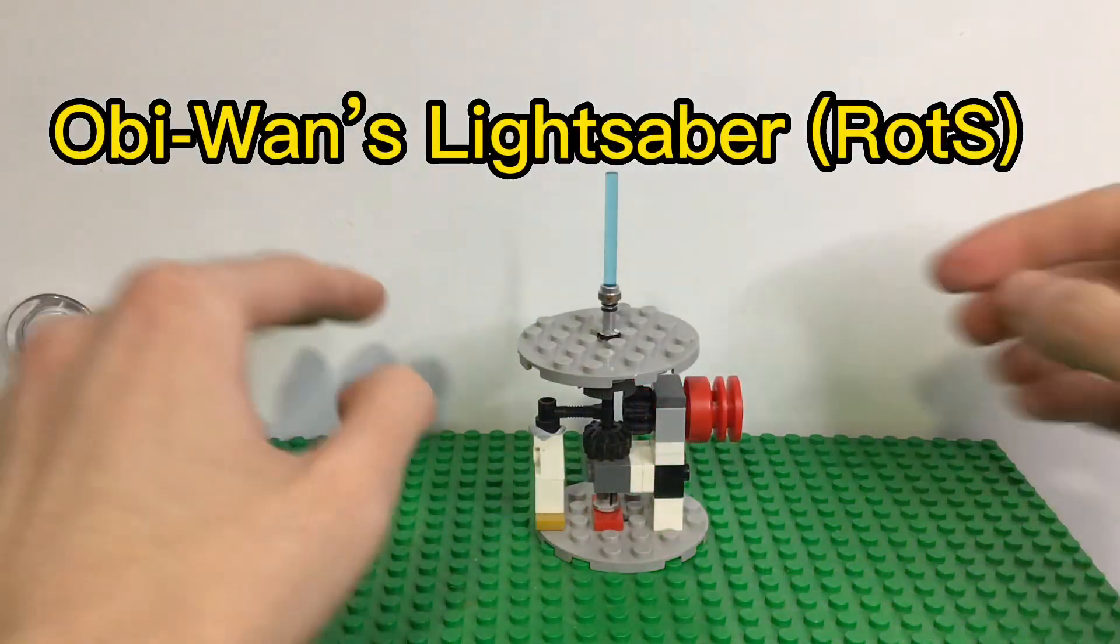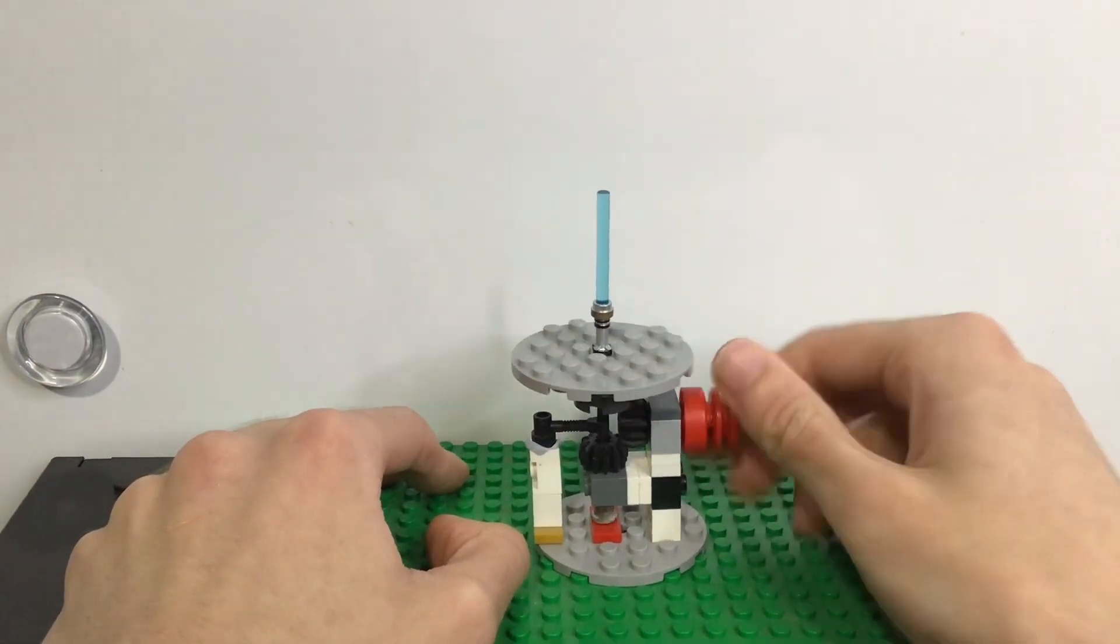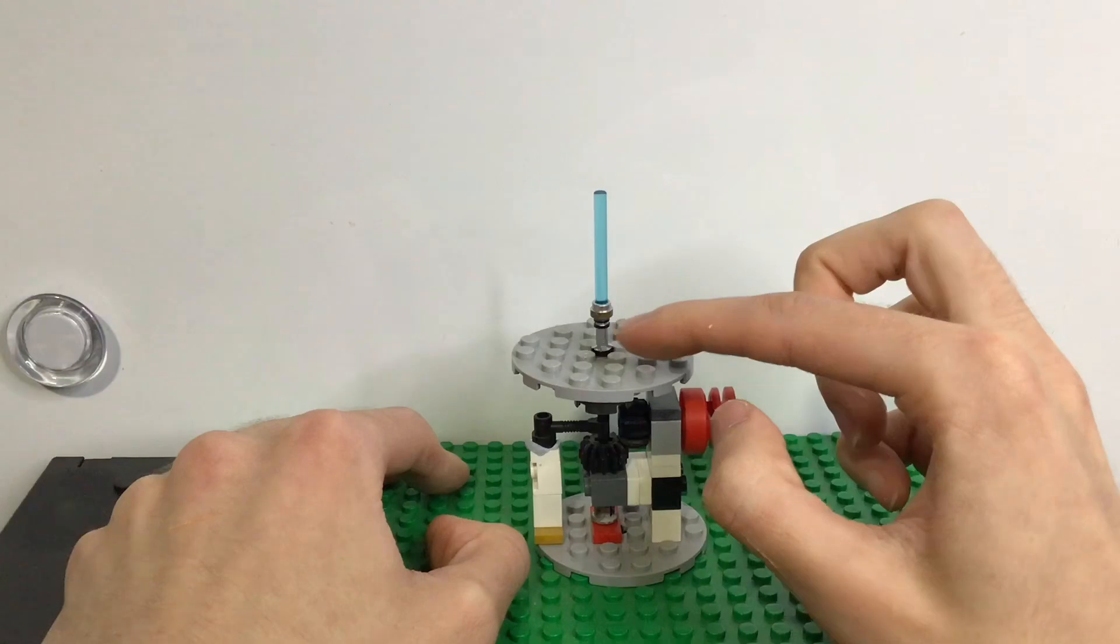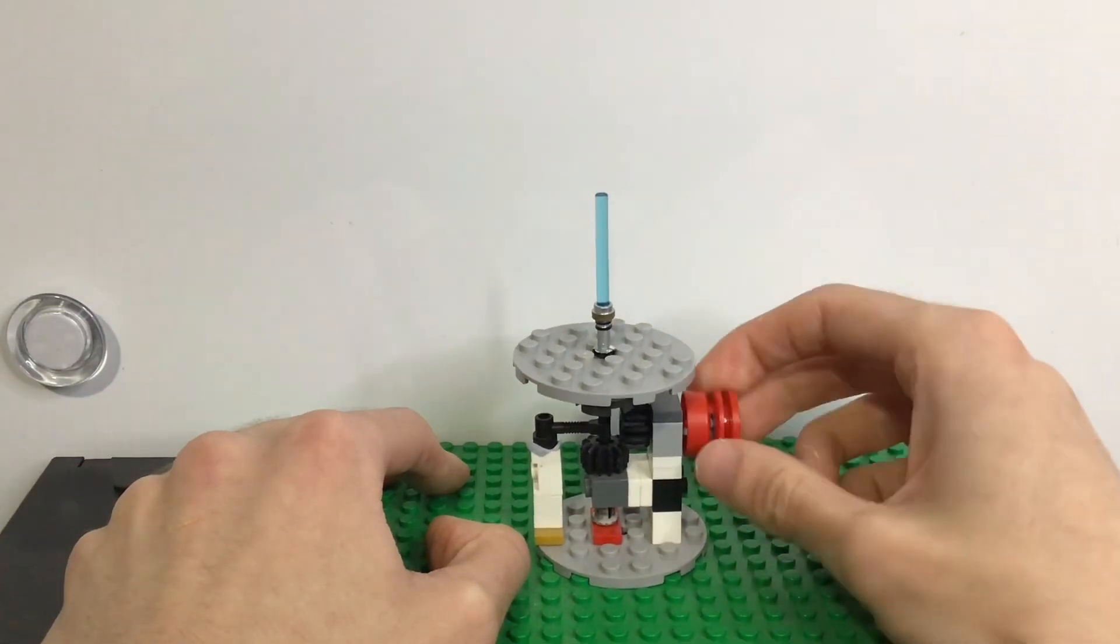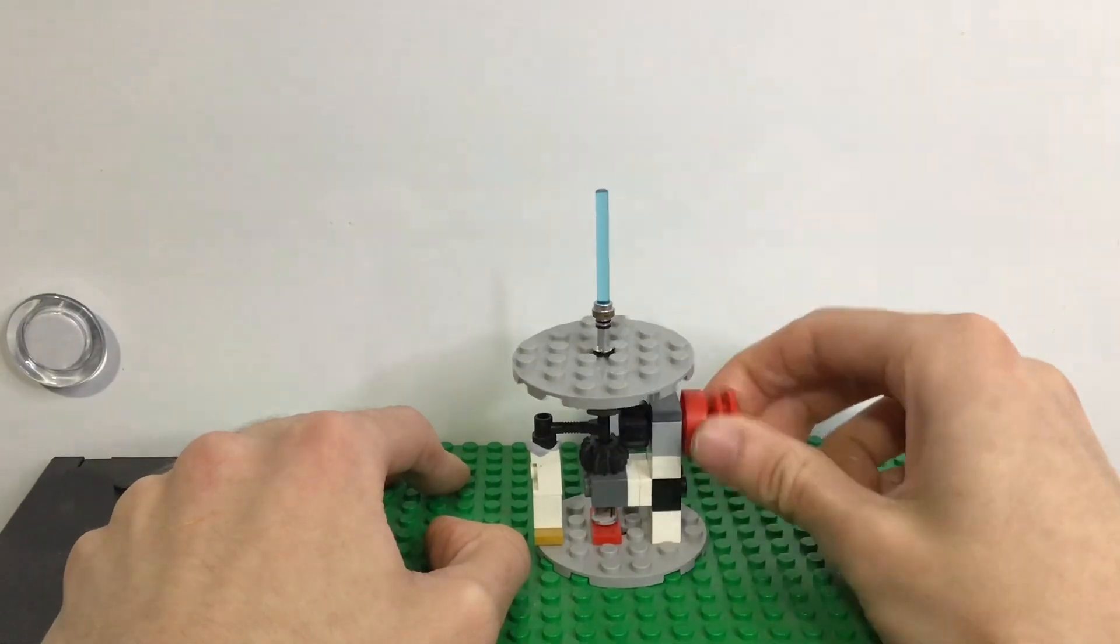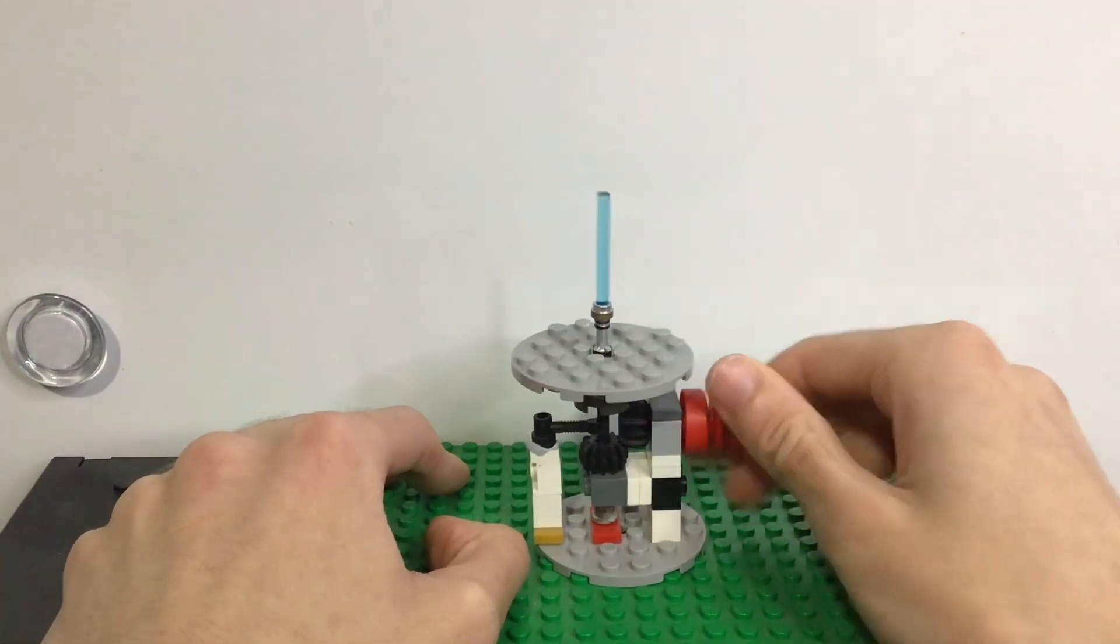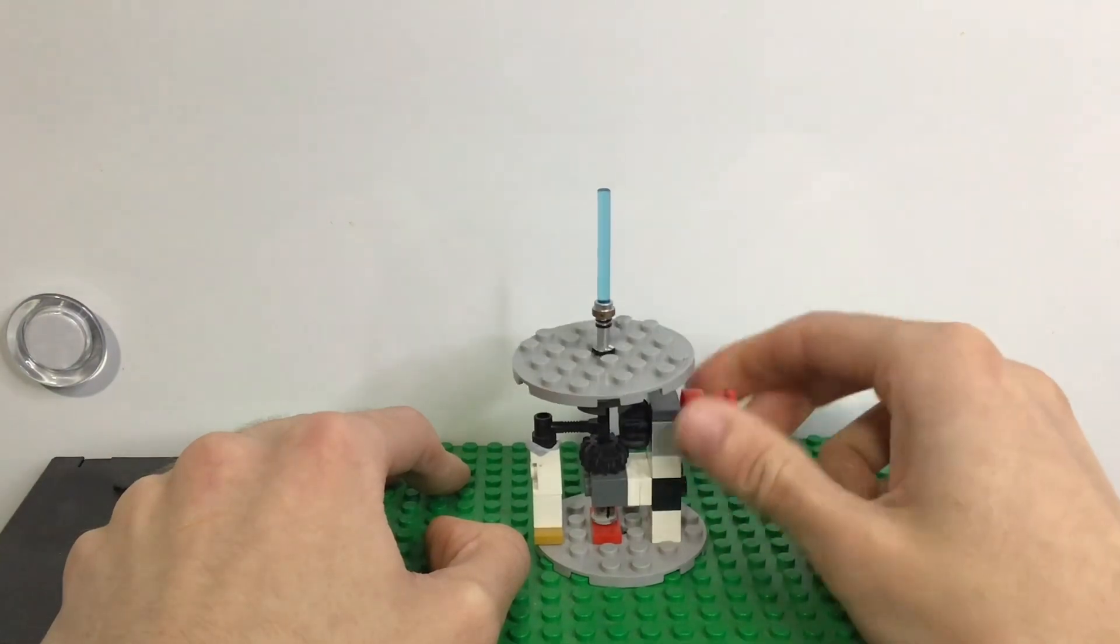Next up we have Obi-Wan's lightsaber from Revenge of the Sith. As you can see, gold rim, two black stripes down the bottom where the actual hilt has those stripes around them. Then we've got the bottom tip colored black as well. It's got like four prongs coming down - I didn't color those because that's not accurate to the model.